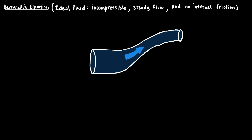In this video I'm going to do a simple derivation of Bernoulli's equation for fluid flow, and by the end of the video I hope you can gain some intuition for why each term of Bernoulli's equation is there and what each term means. For this derivation we're going to assume that the fluid is ideal, meaning it is incompressible — the density of the fluid is constant — and that the fluid undergoes steady flow with no internal friction, which is another way of saying there is no viscosity.